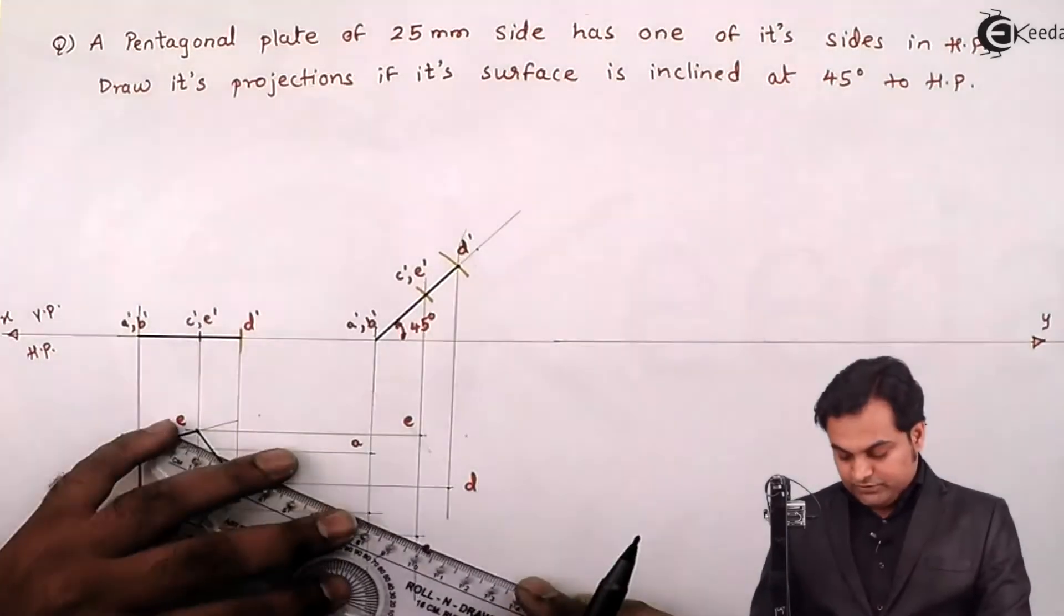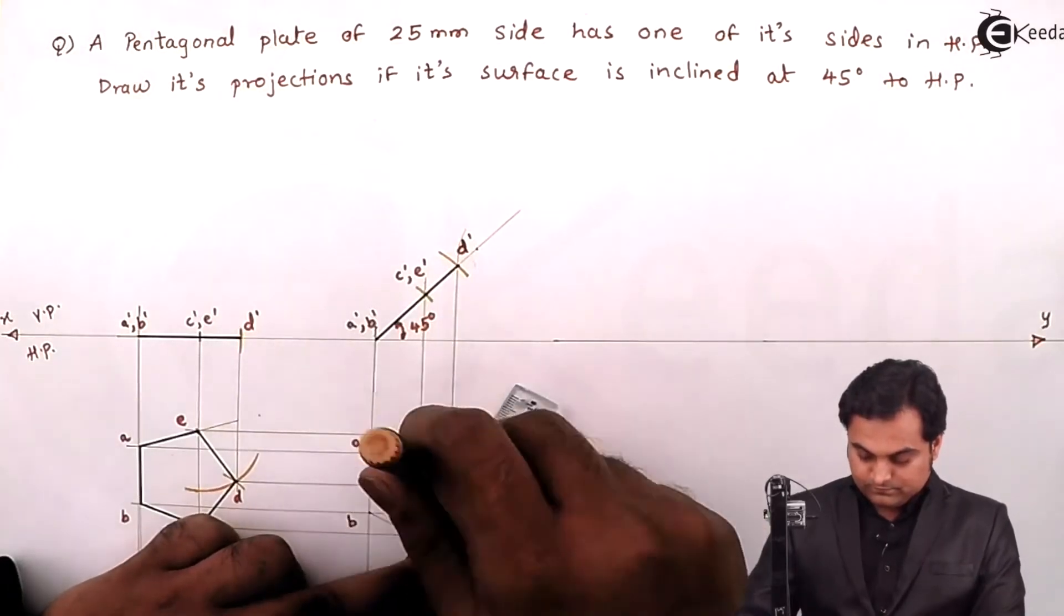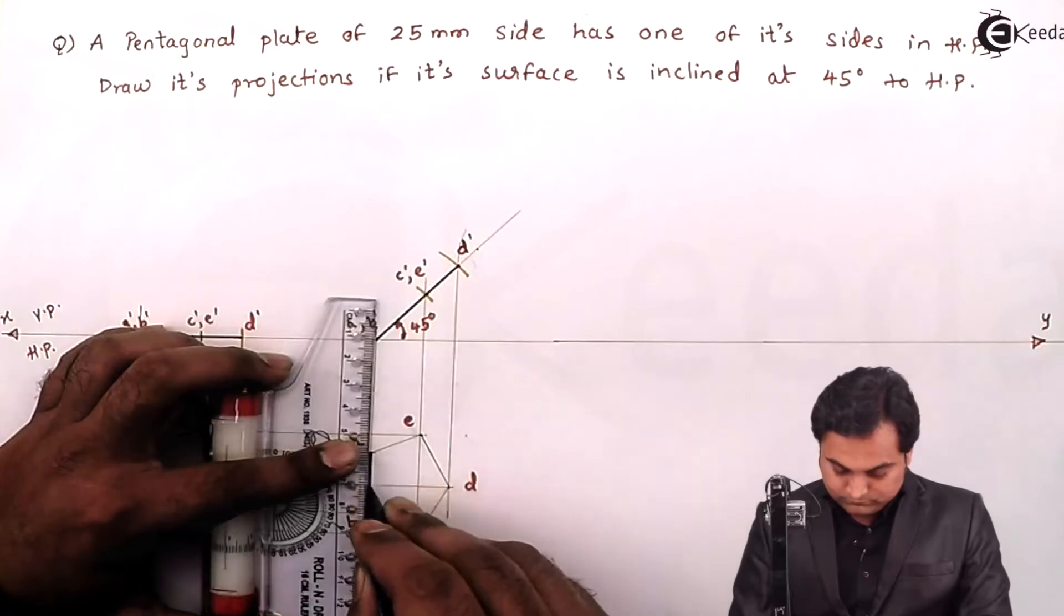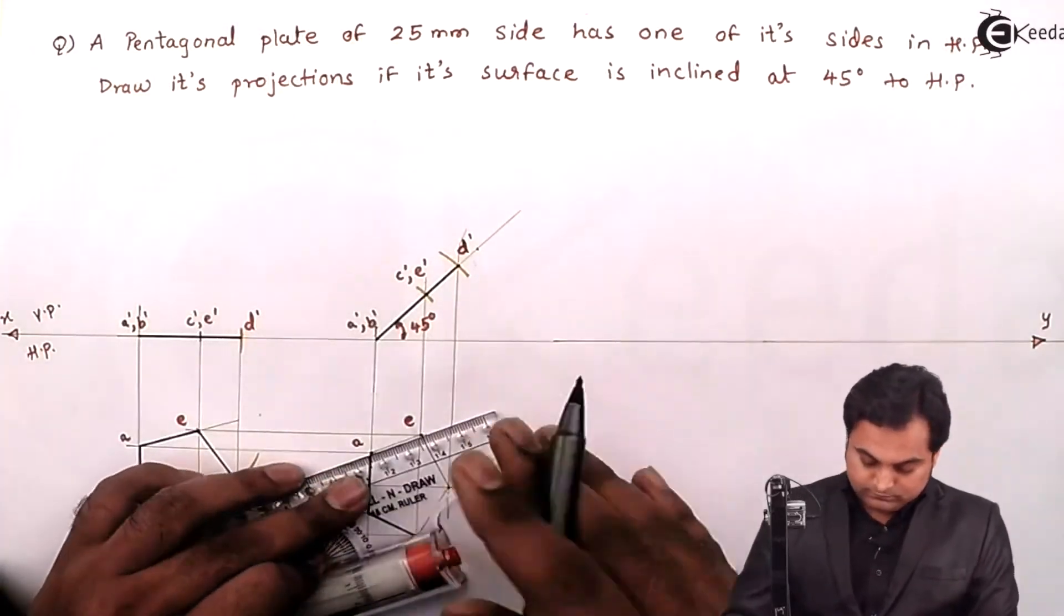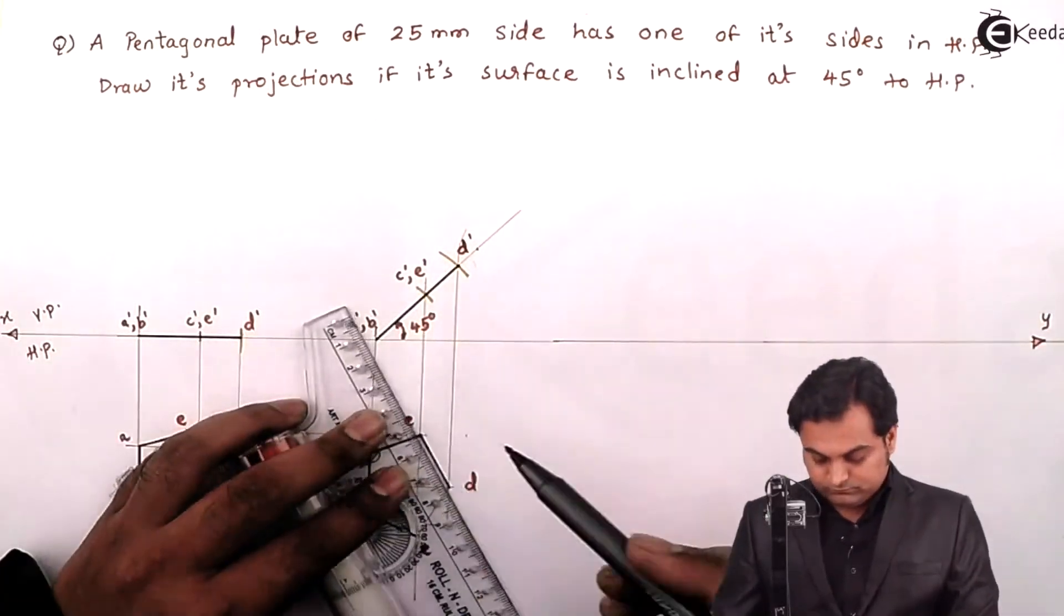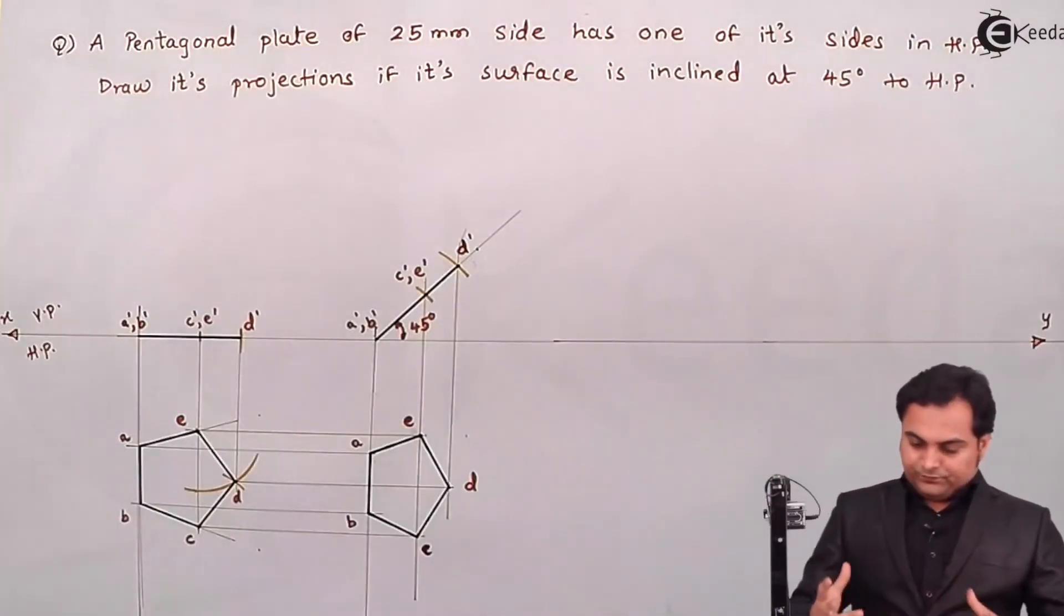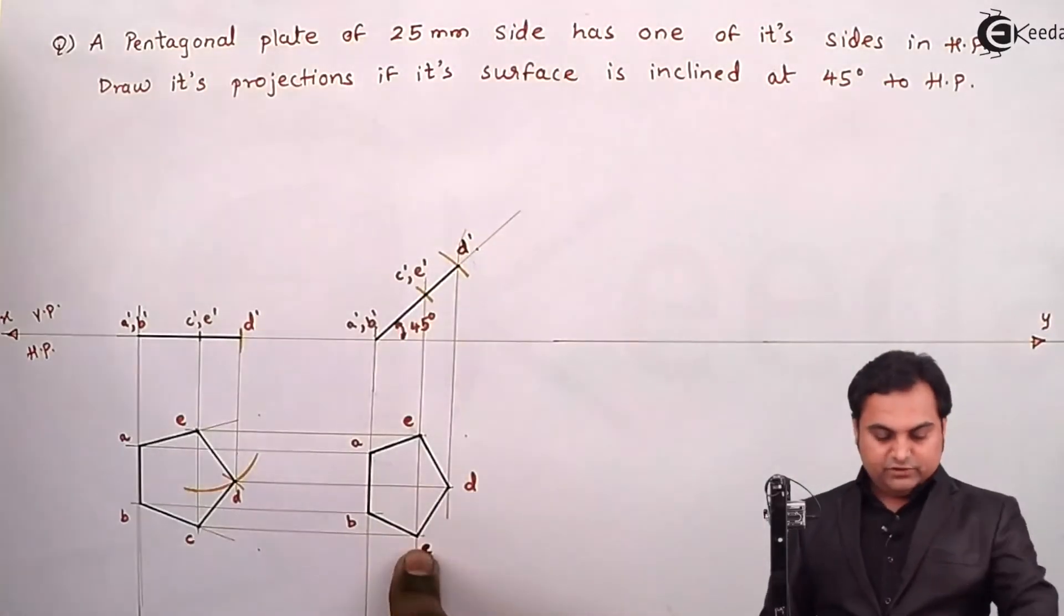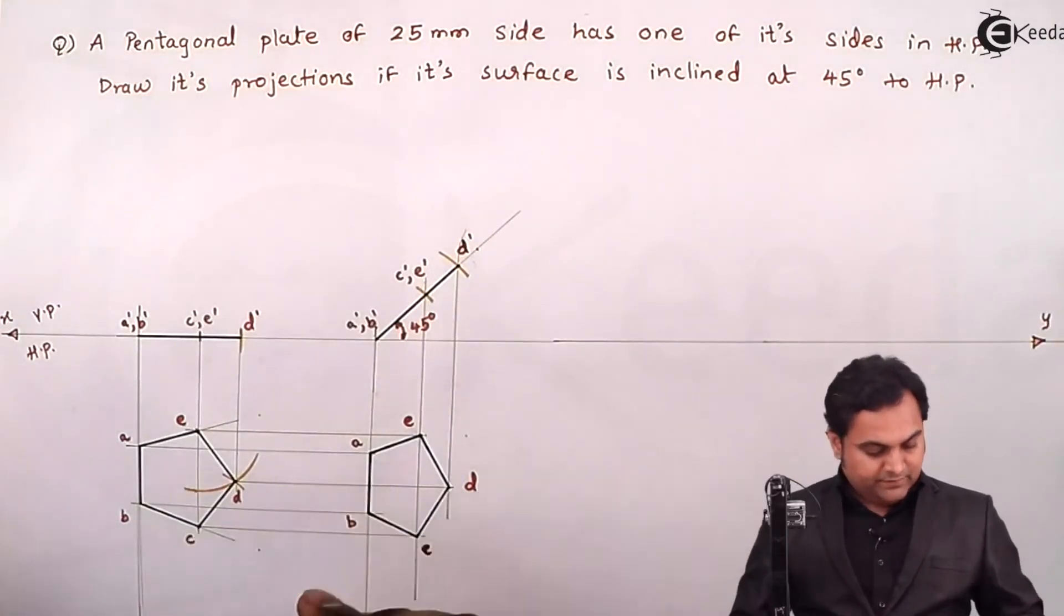Joining all these points, so here this is the front view of the pentagonal plate and here we have the top view. Next I'll give the dimensions to it.